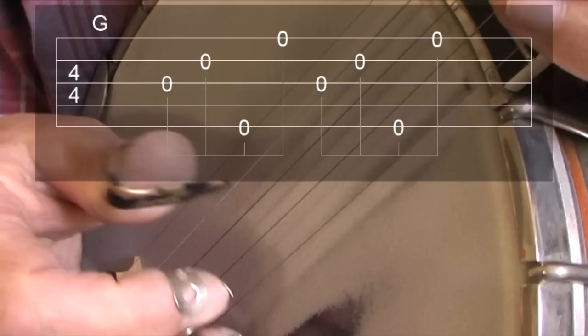We start with the thumb on the middle string, followed by the index finger on the second or B string. The thumb then moves across to play the high fifth string, and the first half of the roll is completed with the middle finger of the picking hand playing the first or D string.